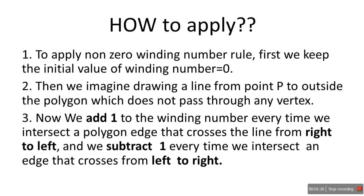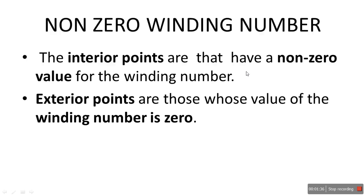Now you will be confused about what is this right to left and left to right. Many teachers will just tell you that, but they won't explain what it means. We'll understand this with an example. The interior points are those that have a non-zero value for the winding number — non-zero means it is not zero; it can be negative or positive. Exterior points are those whose winding number value is zero.